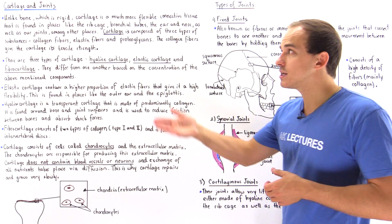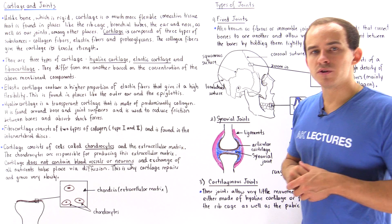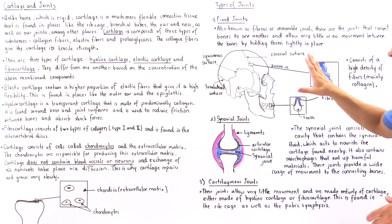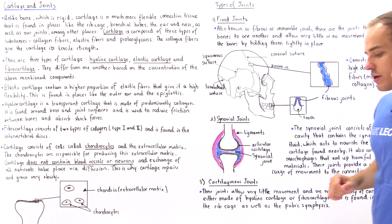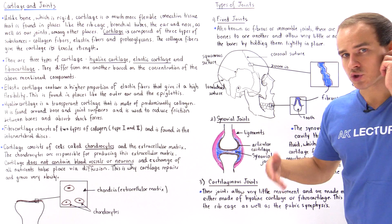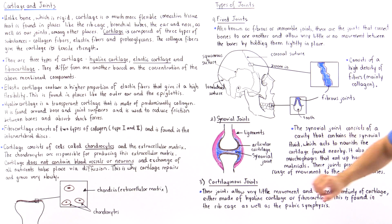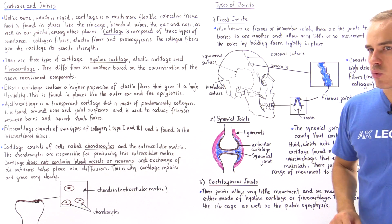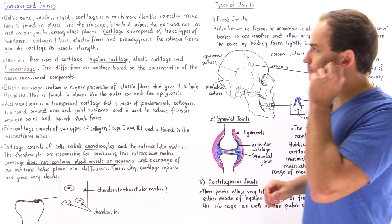On top of discussing cartilage, we're also going to discuss the three types of joints in our body: the fixed joint, also known as the fibrous or immovable joint; the synovial joint; as well as our cartilaginous joints.